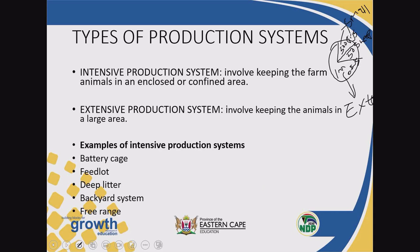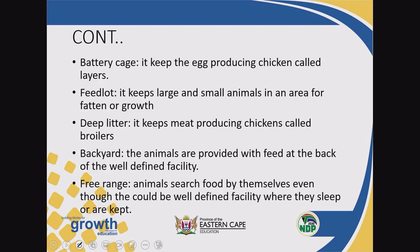We have examples of intensive production systems: the battery cage, feedlot, deep litter system, backyard system, and free range. When we talk about a battery cage, it's where you keep animals that are producing eggs — these animals are called layers. Layers are the animals that produce eggs. Farmers rely on producing eggs in order to sell or to feed their own families.